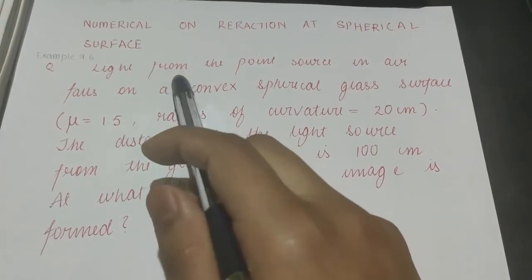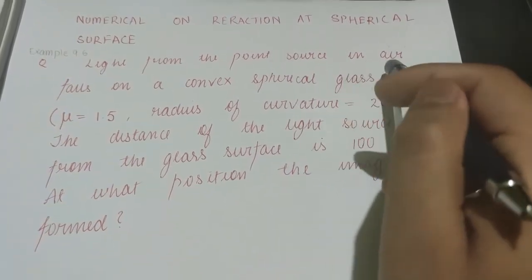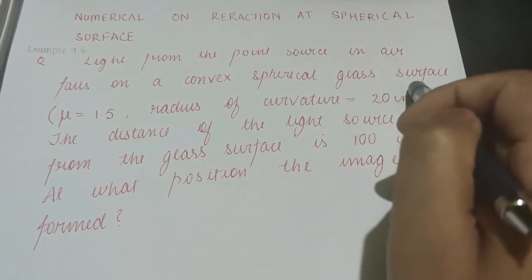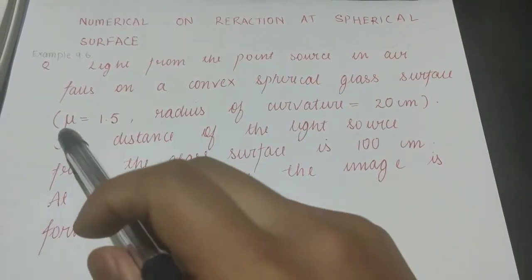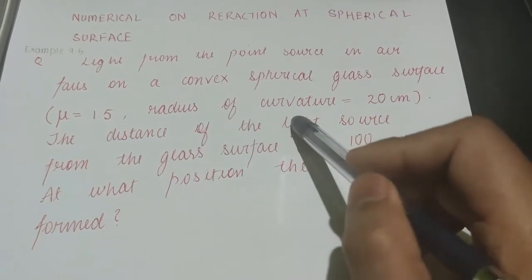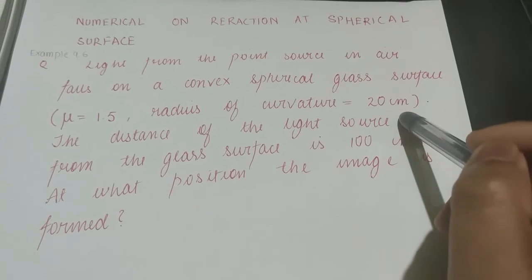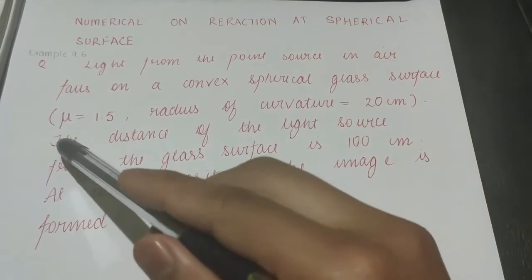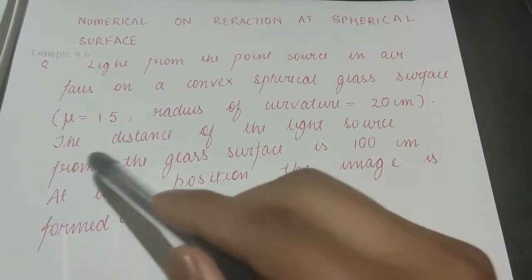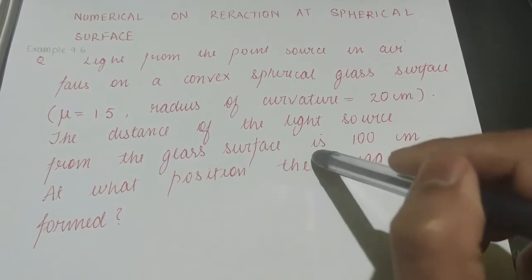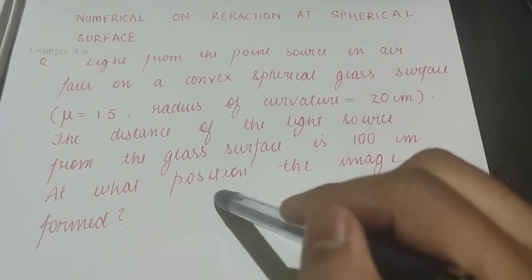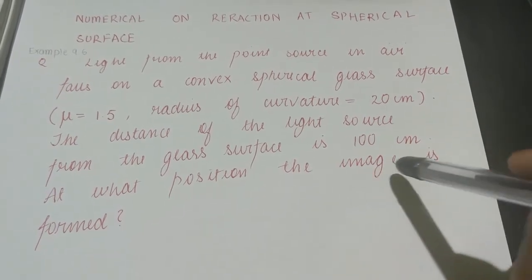The problem: Light from a point source in air falls on a convex spherical glass surface. The refractive index of glass is mu equals 1.5, and the radius of curvature equals 20 centimeters. The distance of the light source from the glass surface is 100 centimeters. At what position is the image formed?